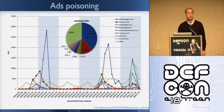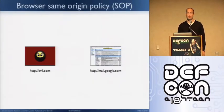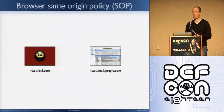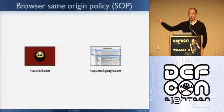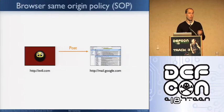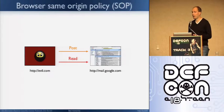How many of you are familiar with the same origin policy? Same origin policy is one of the key security mechanisms in the browser. It's meant to protect you when browsing multiple websites at the same time across multiple tabs or iframes. The basic idea: if you have two origins — say evil.com and mail.google.com — one origin can post data to another, but cannot read from the other. This effectively prevents a bad guy from reading your Gmail or a malicious page from reading your bank account.